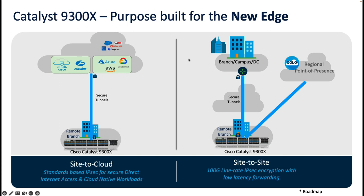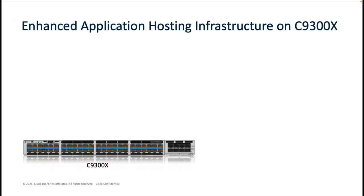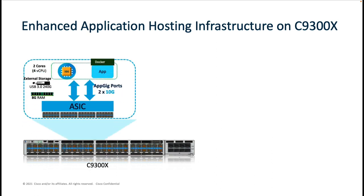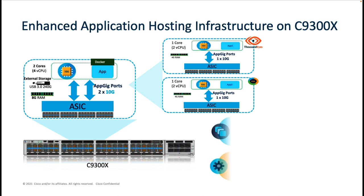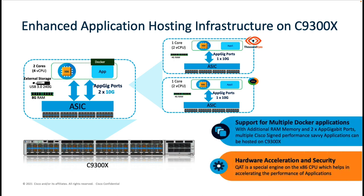The 9300X, along with 100G of IPSec encryption with low latency, assists in terminating high-speed secure tunnels from a remote branch to another branch, campus, or data center. On the Catalyst 9300X, the application hosting infrastructure has been enhanced by doubling the CPU and memory resources to accommodate applications that need a larger footprint. The 9300X models also feature 2x10G AppGig Ethernet connections to the CPU, enabling customers to run multiple applications on the same box.